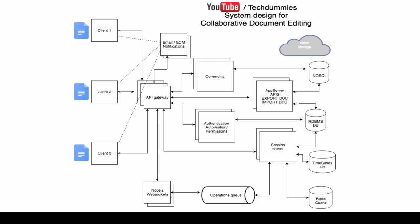Now it's time to look at the system diagram for collaborative document editing. I'm going to give you a high-level overview of how I have designed it. You can always come up with an even better approach — this is what I have come up with. It's not exactly a microservice or monolithic; it's somewhat like a service-oriented architecture. I've kept it very high-level and simple for understanding purposes.